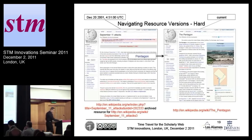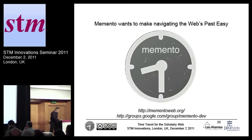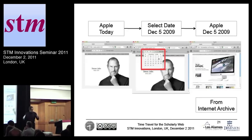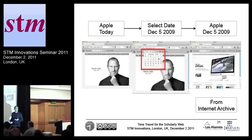That's where a project I've been working on recently comes in. It's called Memento. Memento is an extension of the HTTP protocol, and it allows you to dereference a URI — in this case the one from Apple — subject to time. So you have in your browser a little plugin that allows you to choose a moment in time, and the URI apple.com is dereferenced subject to time. All of that goes automatically — it's protocol-based.